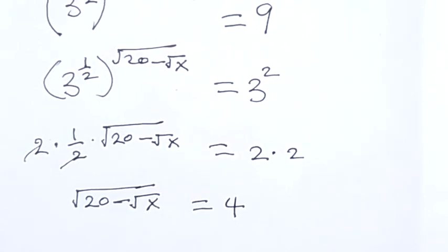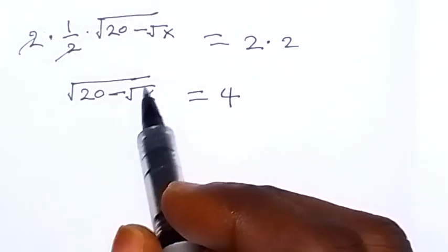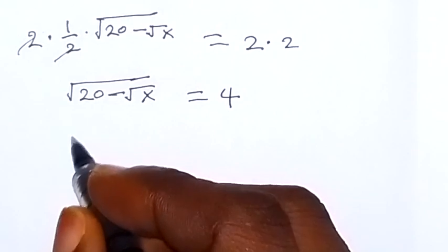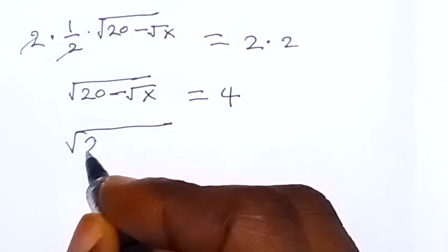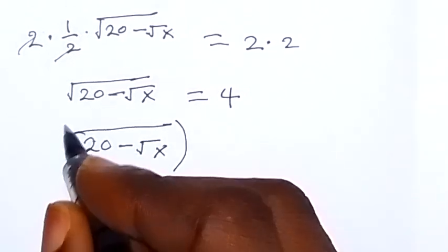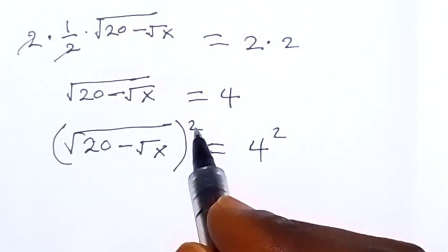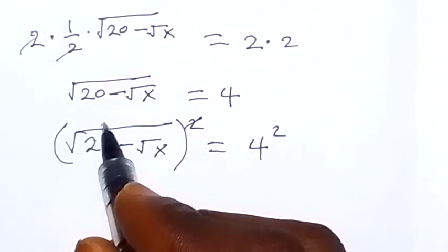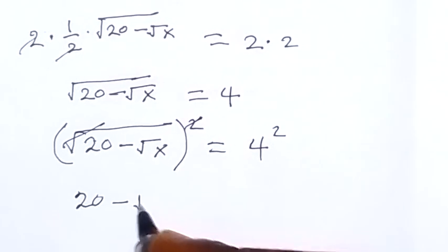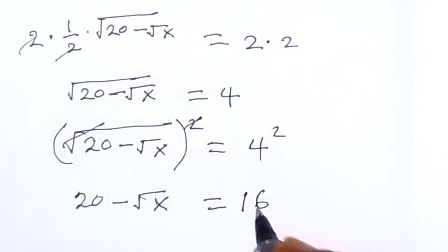We can also square both sides in order to have the square root removed. So squaring both sides, we have root 20 minus root x squared equals 4 squared. That square cancels the square root, and we are left with 20 minus root x equals 16.